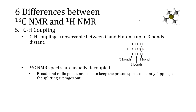The problem is that quantum mechanically, splitting can occur not just with hydrogen atoms directly attached to that carbon, but also hydrogen atoms up to three bonds away. That means the splitting patterns a particular carbon atom can have would be really complex — to the point of being uninterpretable. So most carbon-13 spectra are decoupled.